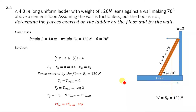Hello everyone, welcome to Easy Edu. This is numerical number 2.8 from the first year of physics. Today we are going to solve this numerical. According to the problem, a 4.0 meter long uniform ladder leans against a wall — this is the wall, this is the floor, and this is the ladder leaning against the wall.